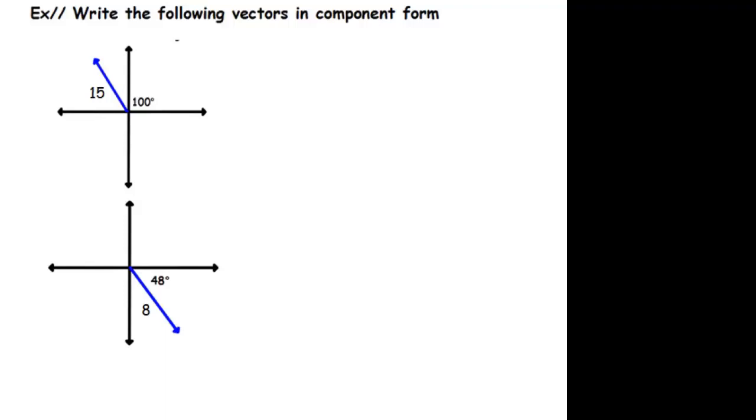So let's do a few examples on how you can write a vector in component form when you're given its magnitude and direction.